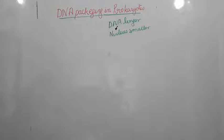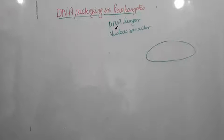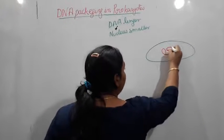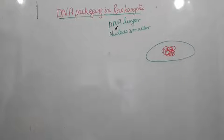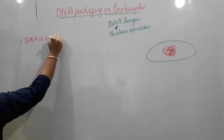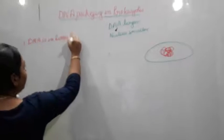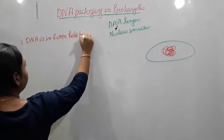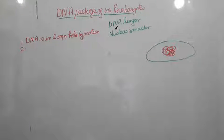In the prokaryotes, the nucleus is not well developed at all. In a bacterial cell, the DNA is present in loops inside the cell. This is a very important point: DNA is present in a loop pattern in prokaryotes, and these loops are held by proteins. Because of the protein, the DNA is bounded inside and well managed.